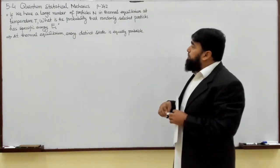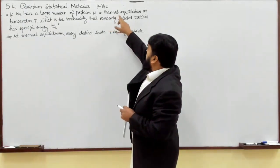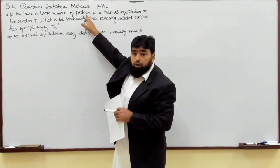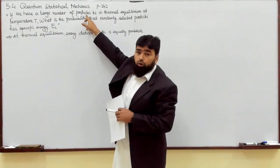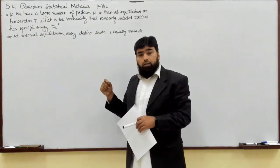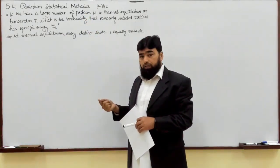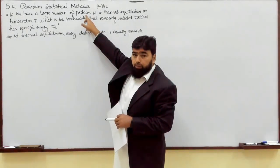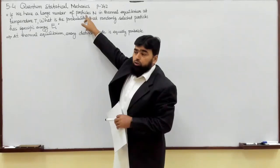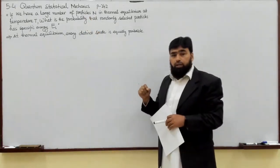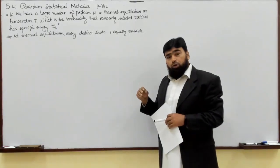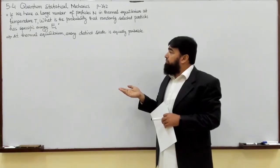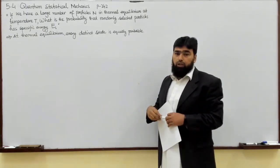The nature of the particles also changes our way of calculation. When particles are distinguishable, we use one method. When particles are identical, calculations differ. And within identical particles, if they are bosons the calculation is one way, and if they are fermions the calculation is different.